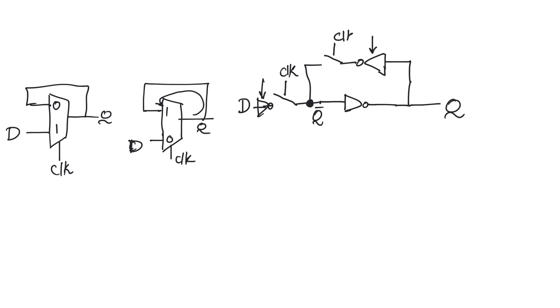We can do this very simply by also using another switch in the feedback path, but this switch is going to be activated by clock bar. So when clock is equal to one, switch one is going to be on, and switch two is going to be off.